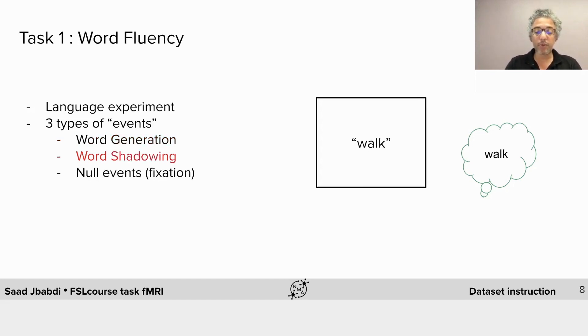The second type is called word shadowing. Here the subject is shown a verb on the screen and they must simply repeat it in their head again without vocalizing.